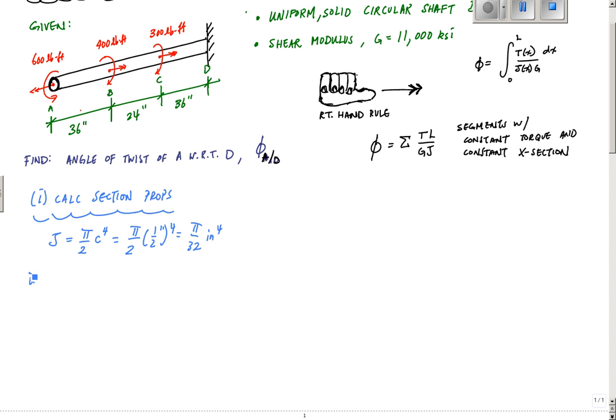Next we calculate the internal torques. Between each concentrated torque, it's going to be constant. So we make cuts. For segment AB, I make a cut here with a torque of 600 pound-feet. Even though I know the direction, I always draw my internal torque TAB internally positive, which is the double arrow facing away from the cut.